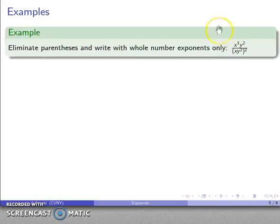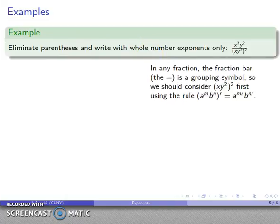We can do some other things as well. So, for example, here's a nice exponential expression. And maybe I want to rewrite this so I don't have parentheses and I have whole number exponents only. Now, a useful thing to remember here is that in any fraction, the fraction bar, the line, is actually a grouping symbol. And essentially, we throw parentheses around what's up top. We throw parentheses around what's bottom. And what that means is that we should consider each of these separately.